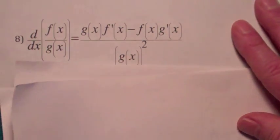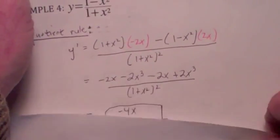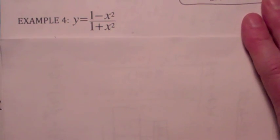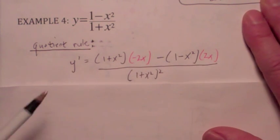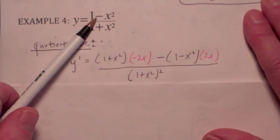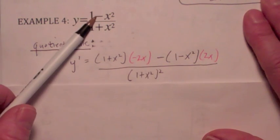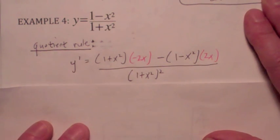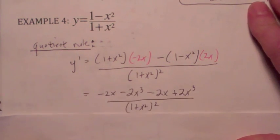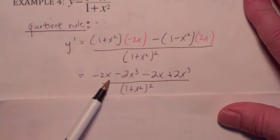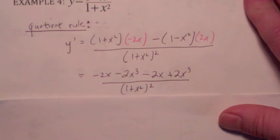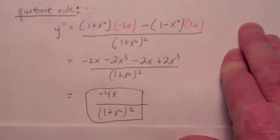When you have a problem like this and you want to differentiate using the quotient rule, the derivative becomes the bottom function times the derivative of the top, which gives you negative 2x, minus — don't forget the minus sign — the top function times the derivative of the bottom, which gives a positive 2x, and you're squaring the bottom function. Multiply the top out carefully: you get negative 2x minus 2x to the third, minus 2x plus 2x to the third, all over (1 plus x squared) squared. The 2x to the third terms cancel, so the final answer is negative 4x over (1 plus x squared) squared.